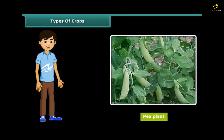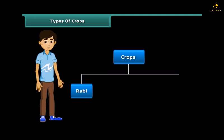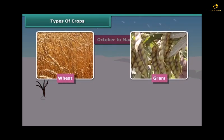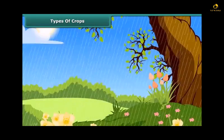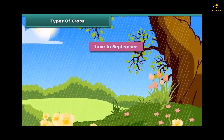If you wish to grow a pea plant in the hot season, you can't do it. In India, crops are broadly classified into two categories on the basis of the season they are grown in. Rabi crops are usually grown in the winter season, from October to March. Wheat, gram, and peas are examples of Rabi crops.